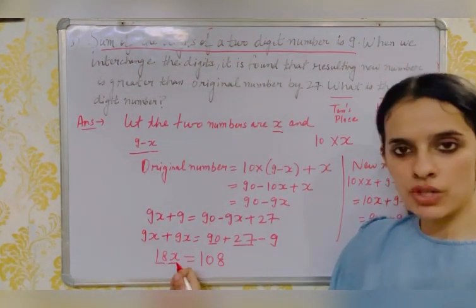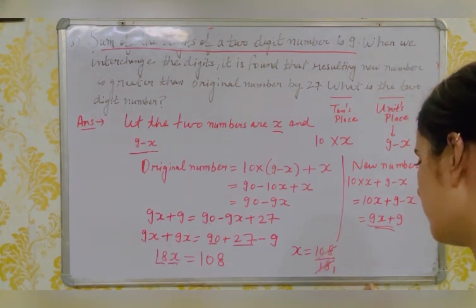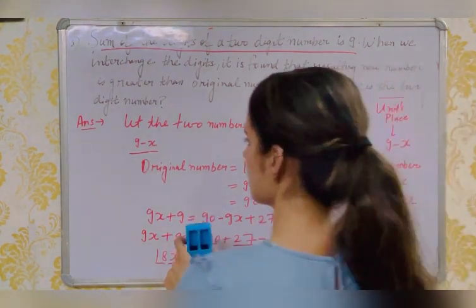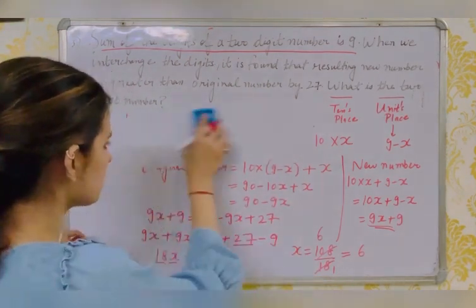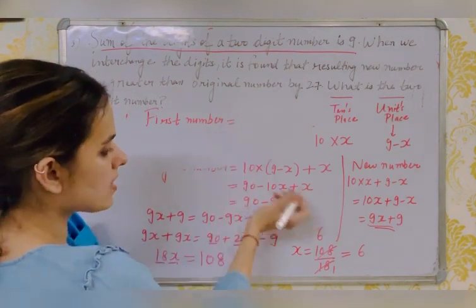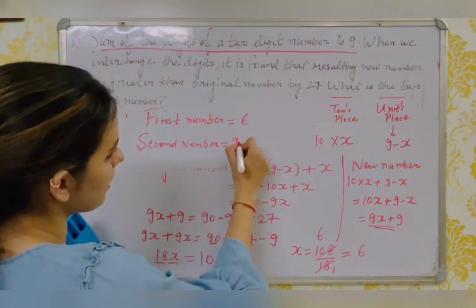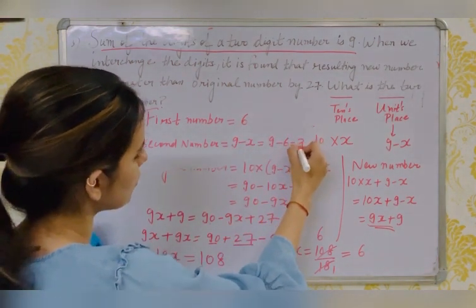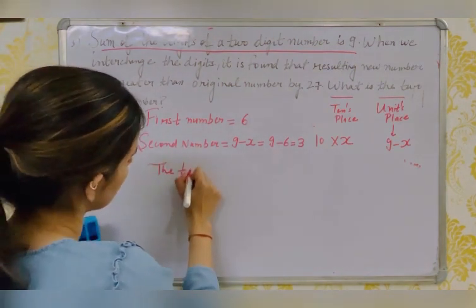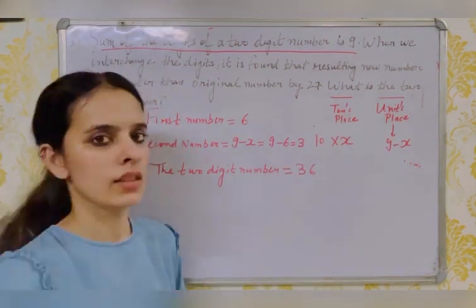So the first digit x = 6, and the second digit is 9 − x = 9 − 6 = 3. Fixing 3 at the tens place and 6 at the units place gives the two-digit number 36. This is your answer.